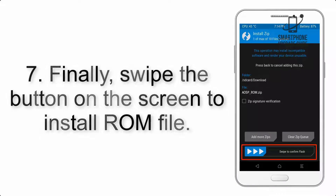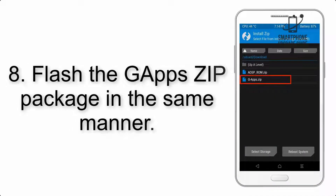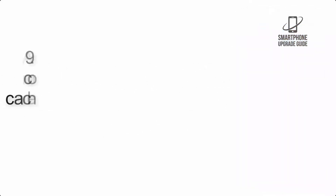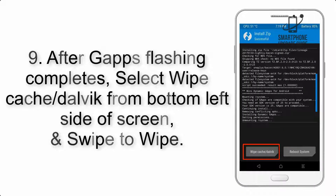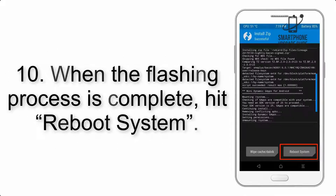Step 7: Finally, swipe the button on the screen to install the ROM file. Step 8: Flash the GApps zip package in the same manner. Step 9: After GApps flashing completes, select Wipe Cache and Dalvik from the bottom left side of the screen and swipe to wipe.